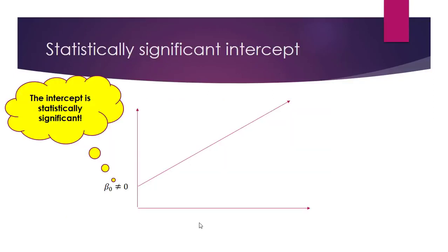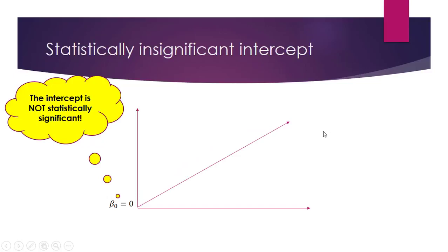What do we mean by a statistically significant intercept term? Suppose we have the following population regression line where the intercept term is non-zero. Therefore, the intercept term is said to be statistically significant, as its population value is different from 0. Now, suppose instead the population regression line has an intercept term equal to 0 — it's said to be statistically insignificant. In practice, we can't observe the population regression line, so we use the output from our sample regression line to judge whether the population betas are likely to be 0 or not — that is, whether they are statistically significant or not.